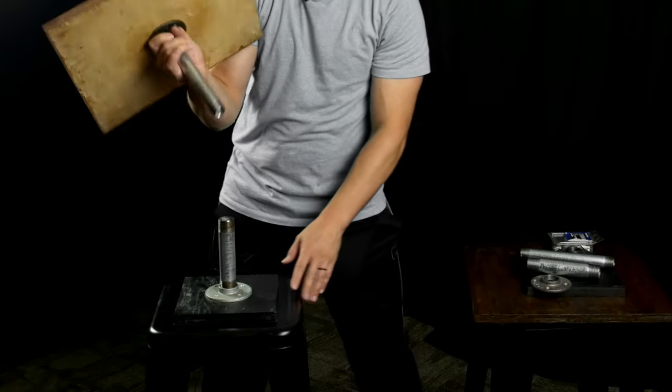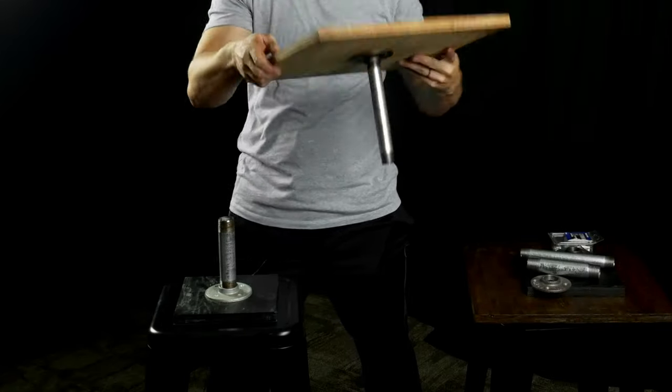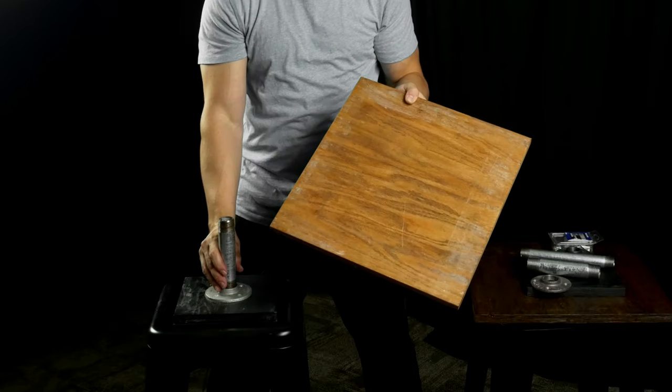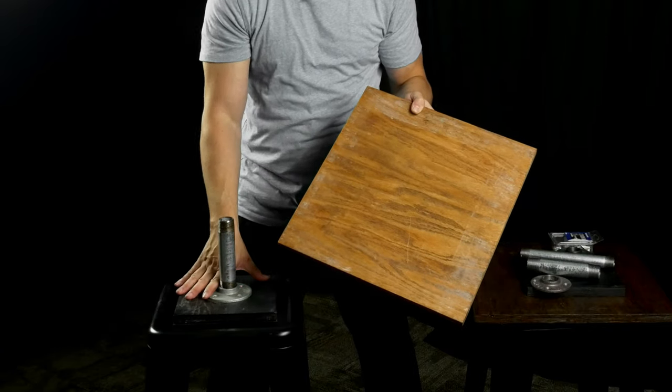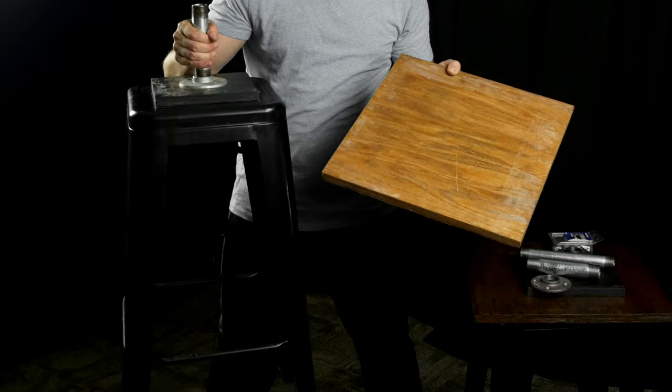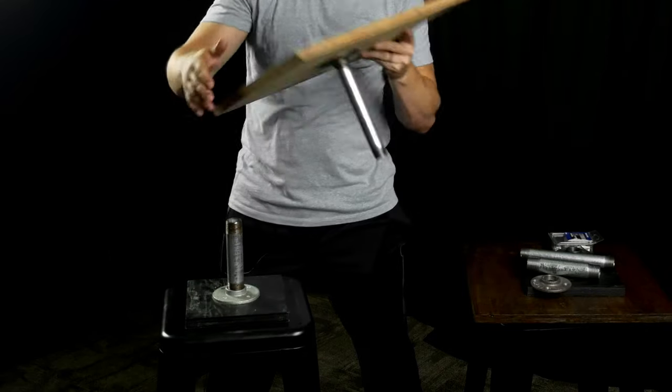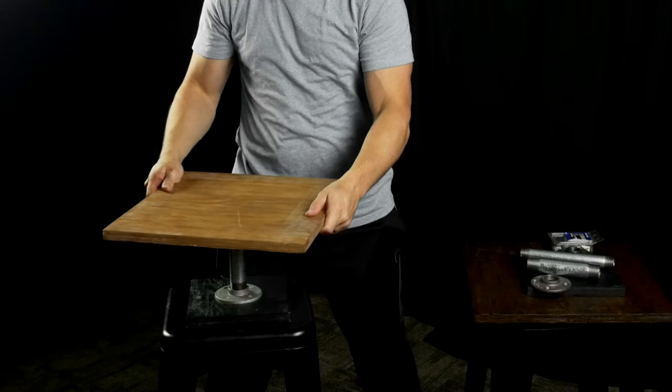So how this stool works is there's two pieces of metal piping and a floor flange on each side and so the pipes can fit into each other. There's a larger pipe on the stool, a smaller pipe that's attached to the table part and then those fit within each other.